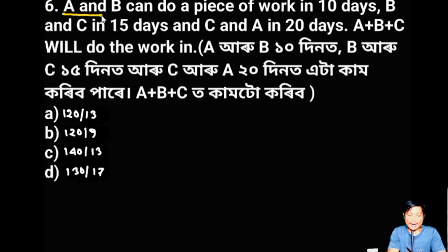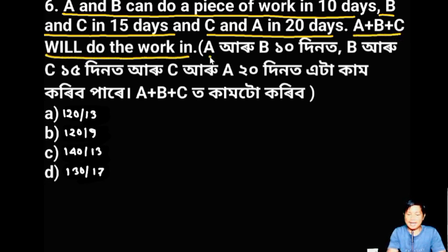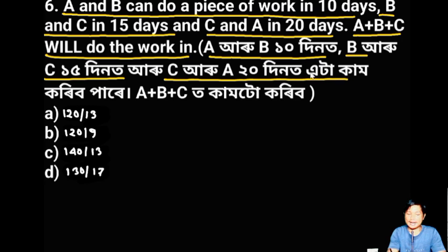1 and 2 can do a piece of work in 10 days, B and C in 15 days, and C and A in 20 days. A plus B plus C will do the working — A and B: 12, B and C: 15, C and A: 20. How many days will all three together finish the work?